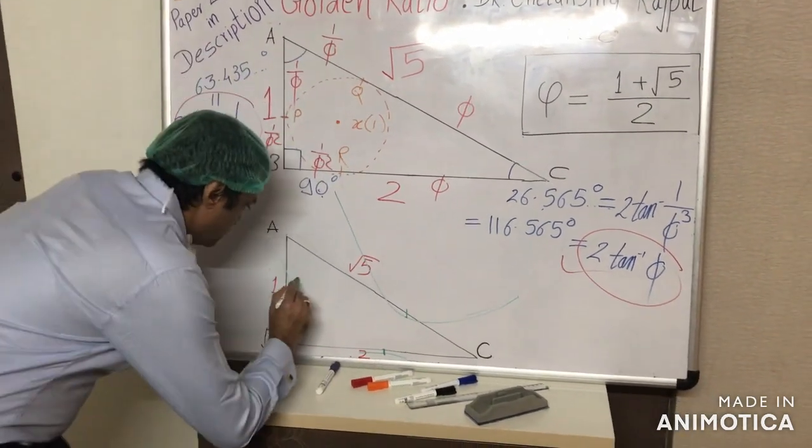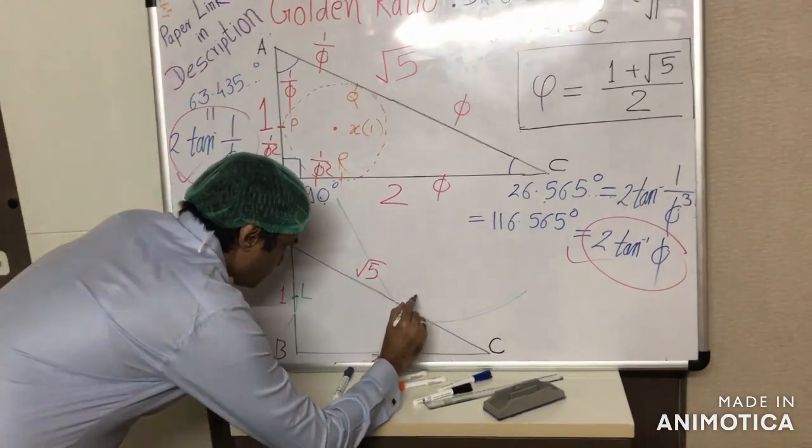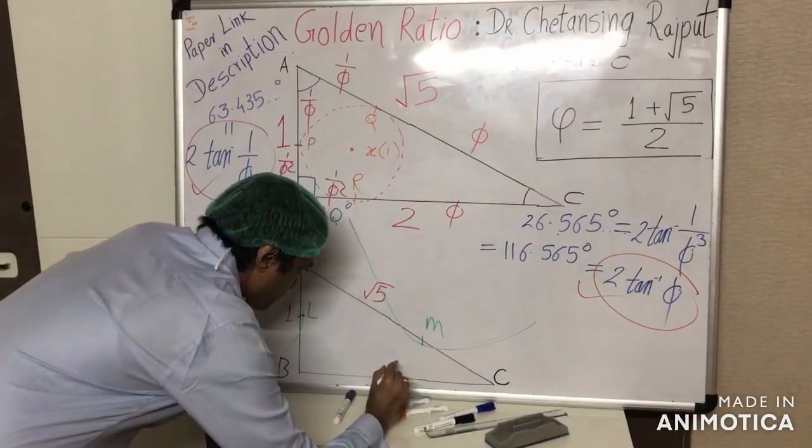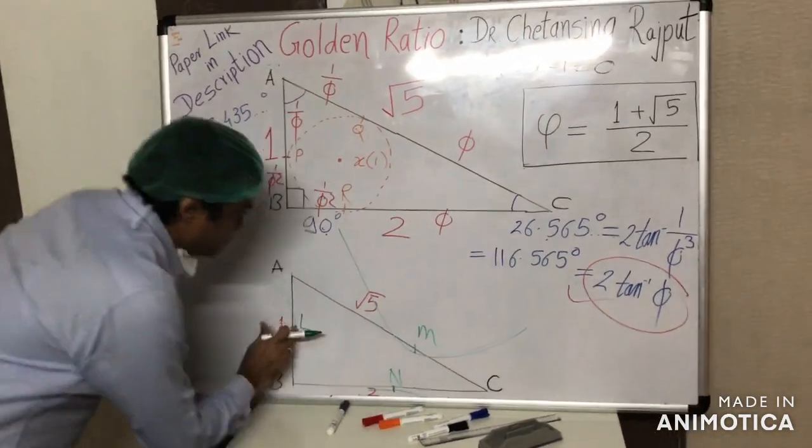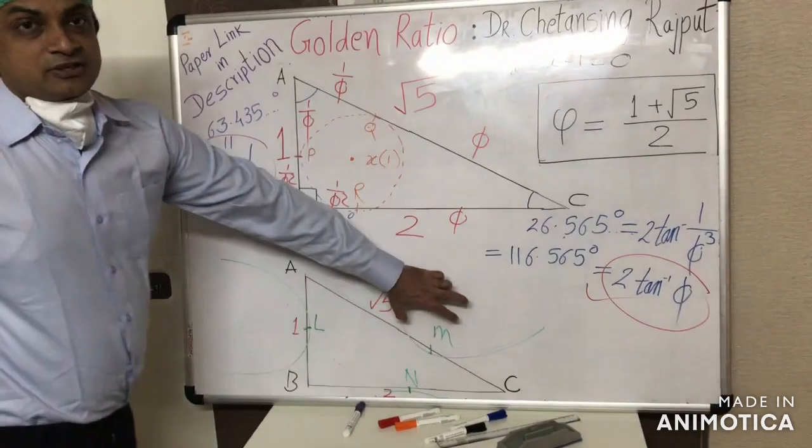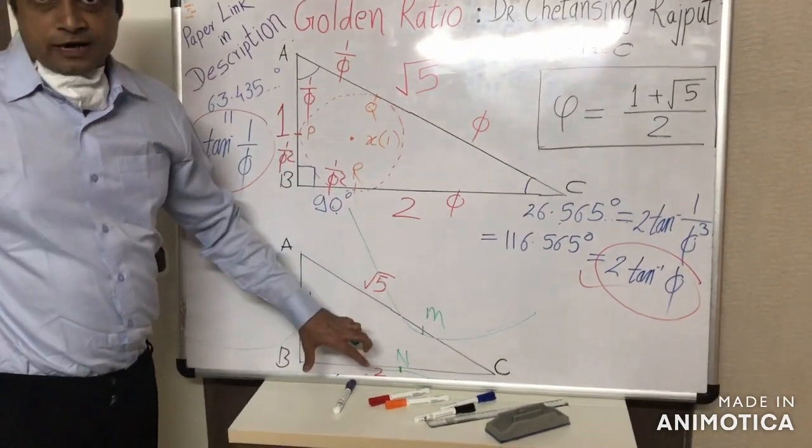Even the touch points of the excircles, suppose L, M, and N, these are the touch points of three excircles of this 1 to root 5 triangle.